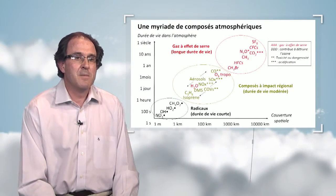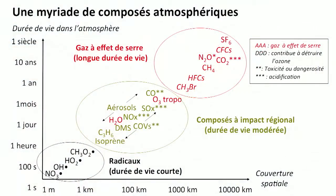There are many compounds in the atmosphere, and they must be listed and classified. Here we have the duration of time in the atmosphere vertically and horizontally — the spatial impact. The compounds are in the middle. On the right-hand side are those with long atmospheric lifetimes that can be transported globally and have a planetary impact. On the left-hand side are very short-lived compounds that play a role in the active chemistry of the atmosphere.